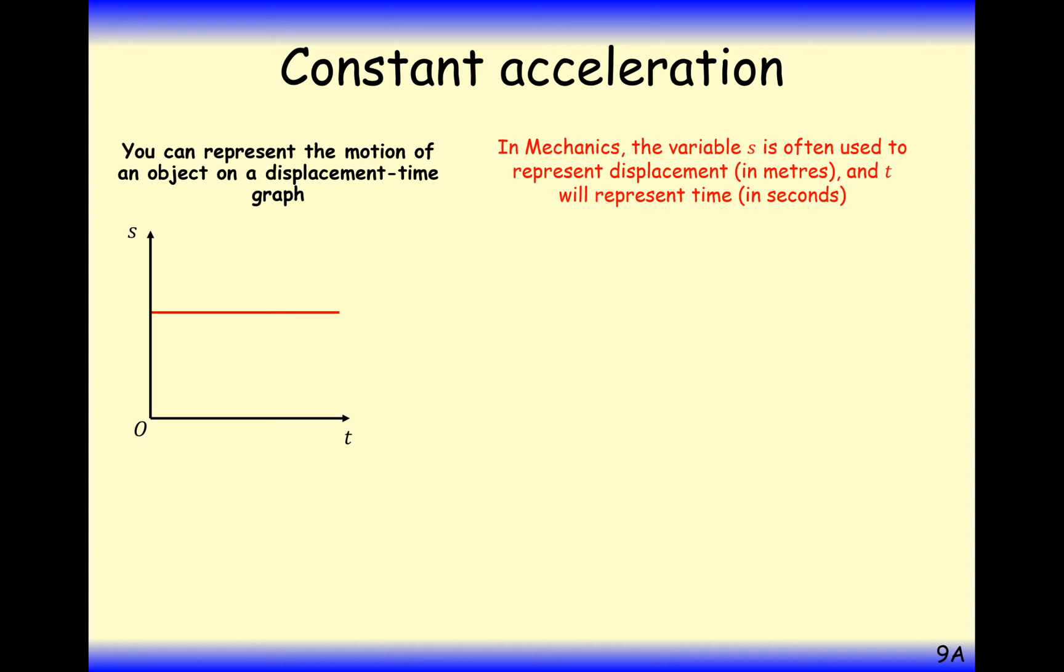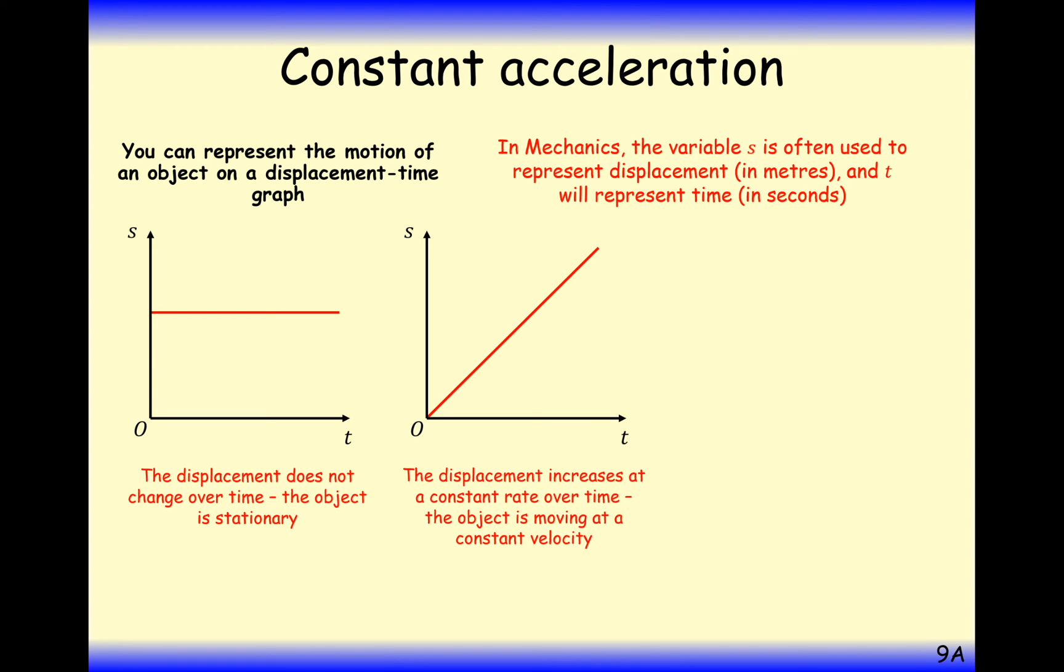In mechanics, we usually use the variable s for displacement and t for time. A displacement time graph that's a flat line means the displacement is not changing as time goes on, so the object is stationary. If the graph is increasing, then the displacement is increasing as time goes, which means the object is moving at a constant velocity.